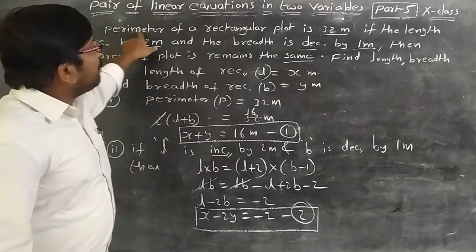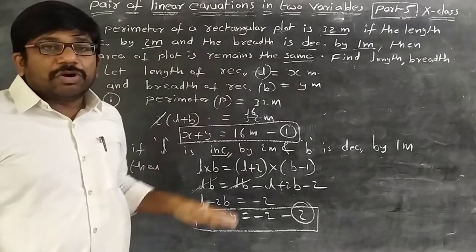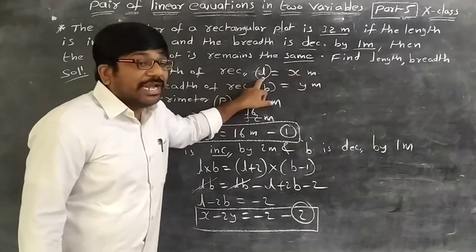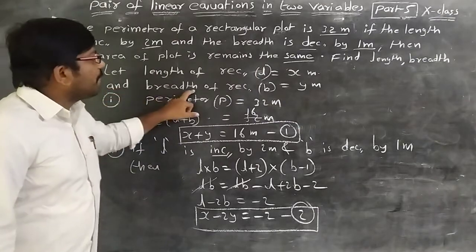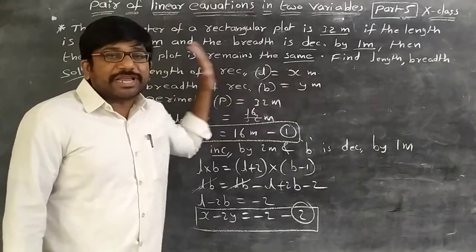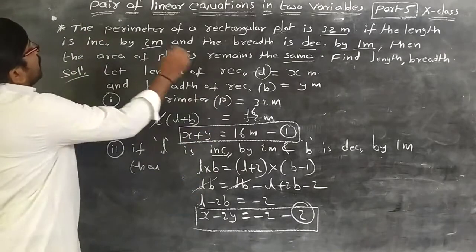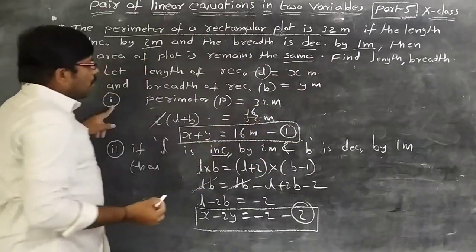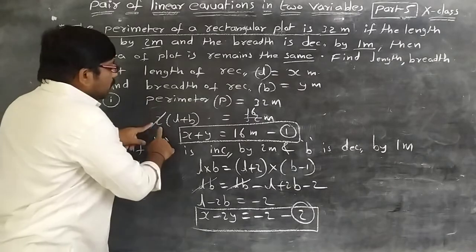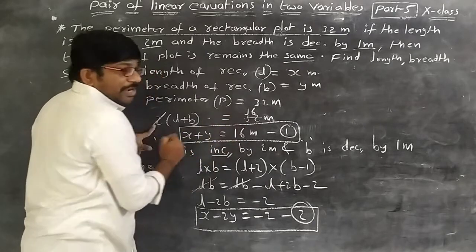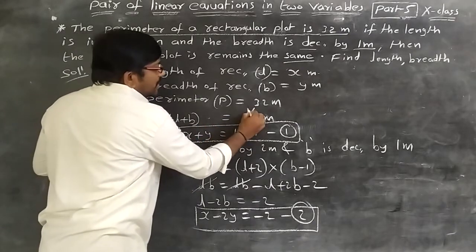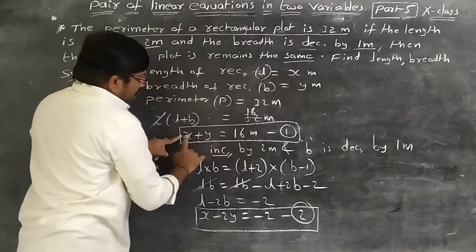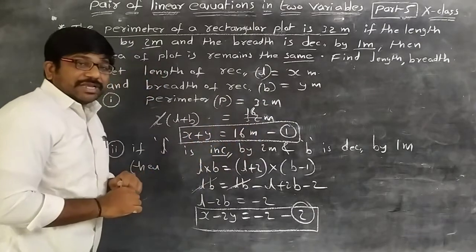From the first condition, the perimeter of the rectangular plot is 32 meters. We don't know the length and breadth. Let the length of the rectangular plot L = x meters and breadth B = y meters. Perimeter formula: 2(L + B) = 32, so L + B = 16. Substituting, x + y = 16. That is equation 1.